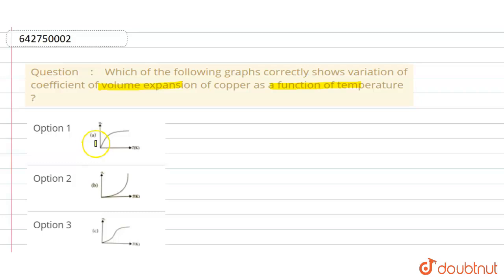There are four options given here and we know that on volume expansion of the copper, this can be written as delta V divided by V equals αV into delta T.